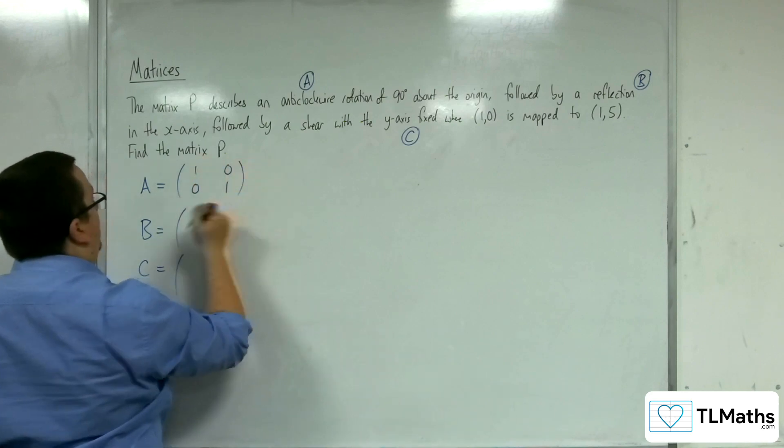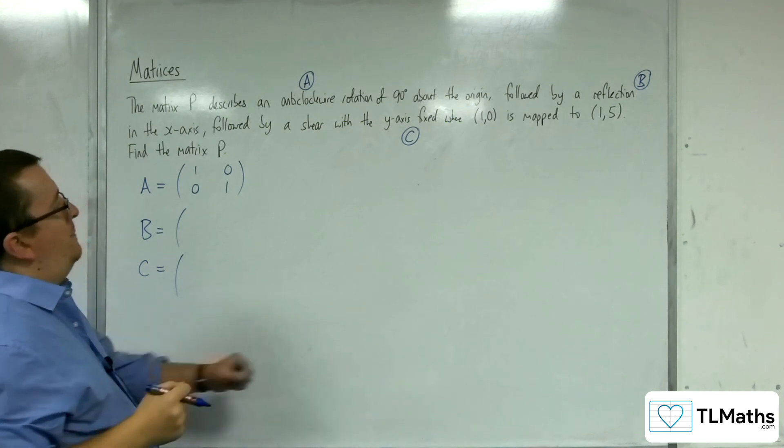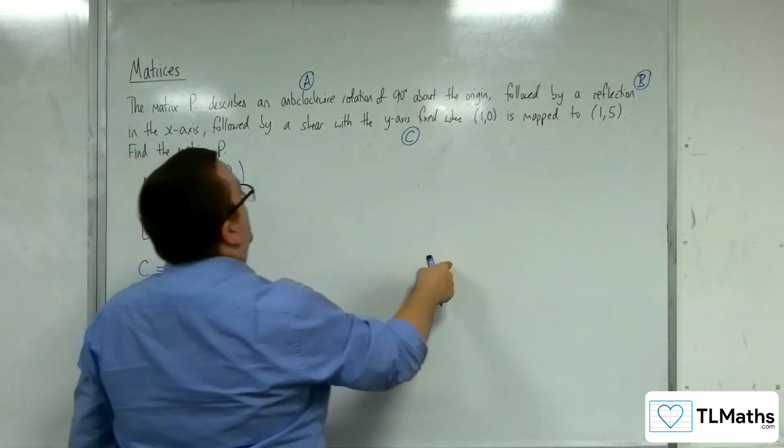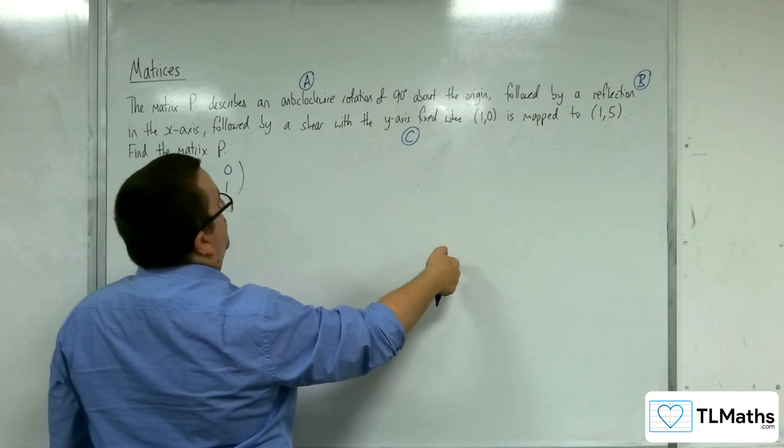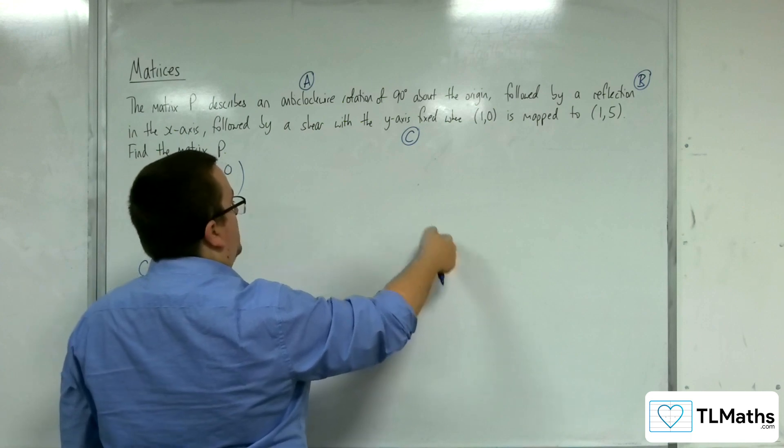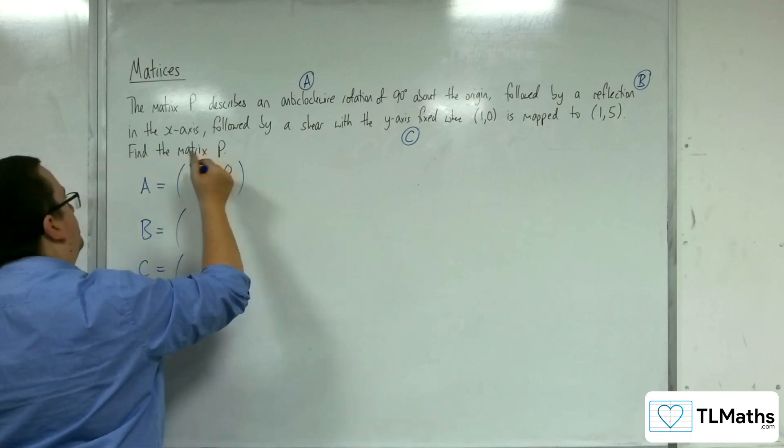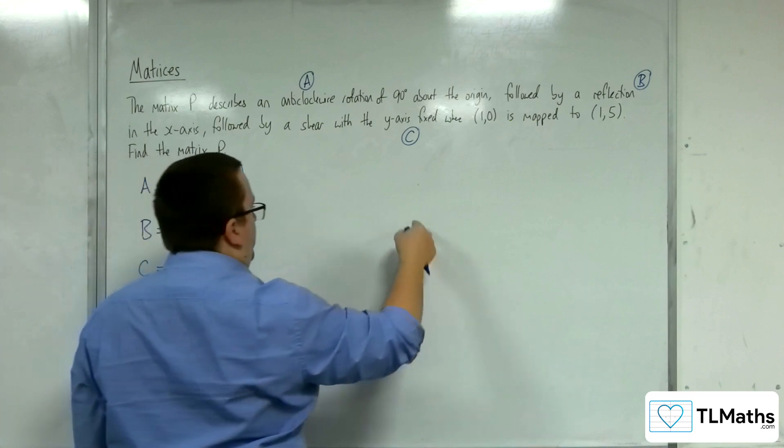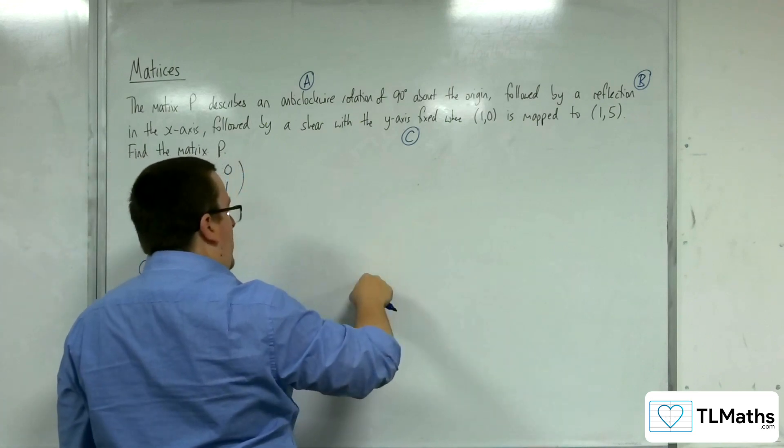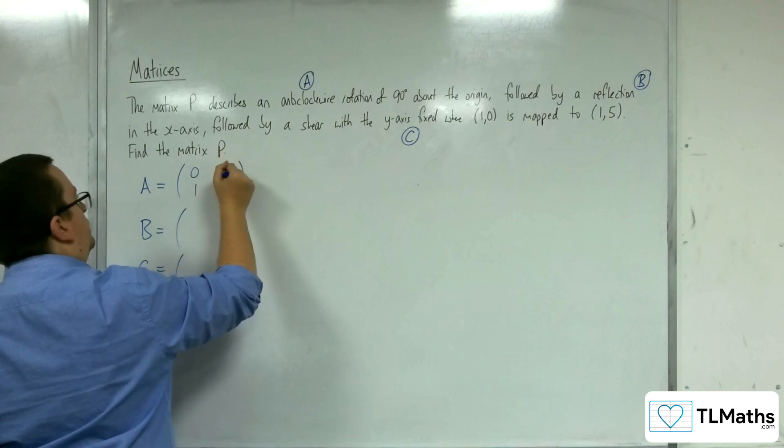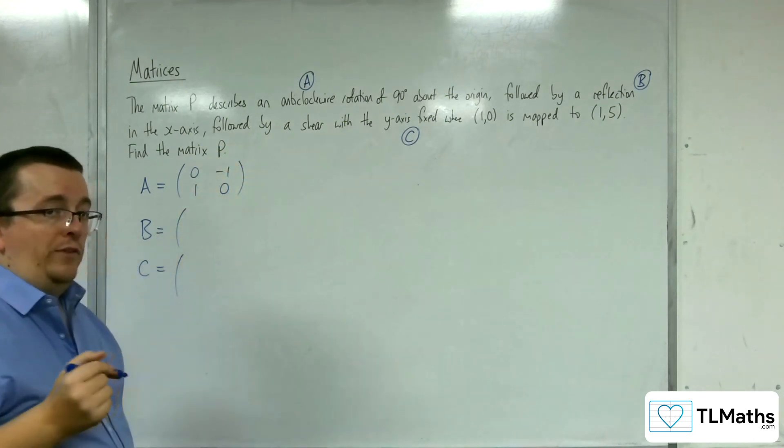Now we know that matrix A is this. So what's happening? 1-0 is getting mapped to round 90 degrees about the origin, so that's going to 0-1. And 0-1 is going round to minus 1-0. So that's the matrix A.